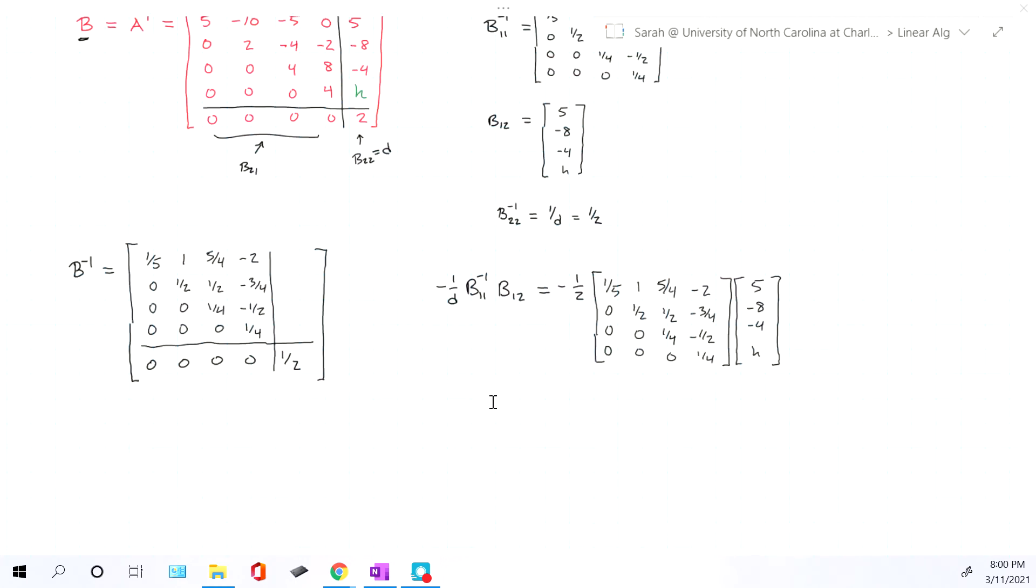So if we do that, we'll have negative 1 half out front. We're going to multiply each row in the first matrix by each column in the second matrix. Oh wait, there's one column in the second matrix, so just each row in the first matrix by that one column. So we'll have negative 1 fifth times 5, that's 1, 1 times negative 8, that's negative 8, 5 over 4 times negative 4, so that's negative 5, and negative 2 times h, that's negative 2h, don't overthink it.